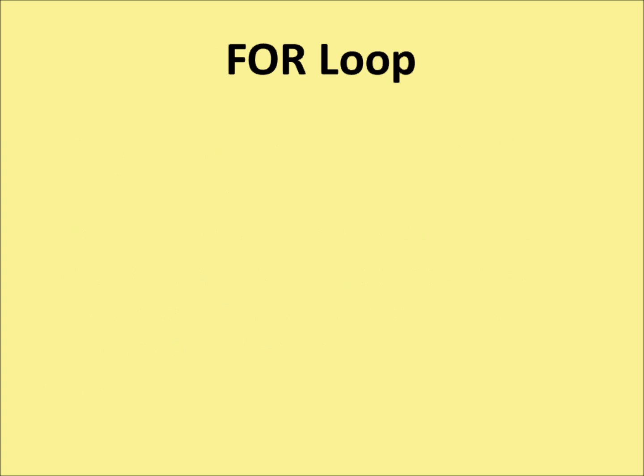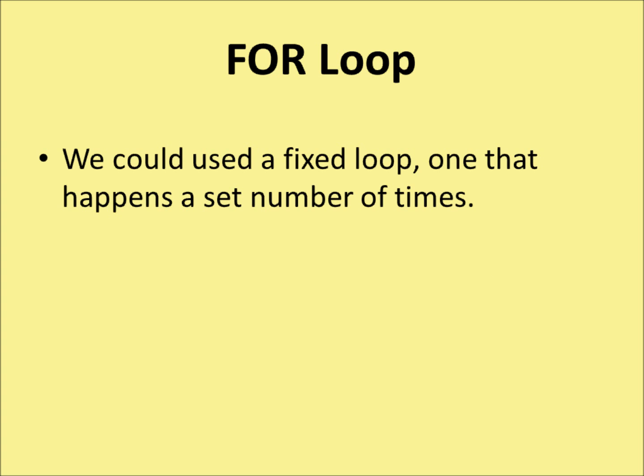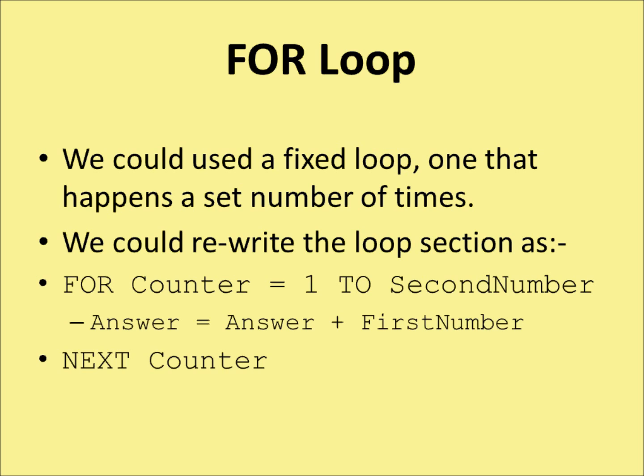The final kind of loop is a for loop — a fixed loop. It's one that happens a set number of times. We could rewrite the loop section as: for counter equals 1 to the second number — in other words, count from 1 until you get to the second number — do answer equals answer plus first number. We keep adding the first number to the answer as many times as the second number allows, using the counter to track progress.